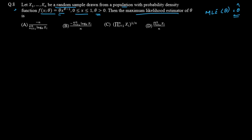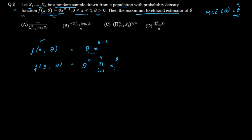To find the MLE we differentiate the likelihood function. The pdf is θ·x^(θ−1), and considering all n random samples, the likelihood function is L(θ) = θ^n × Π_{i=1}^{n} xi^(θ−1), where all the xi terms are multiplied together.